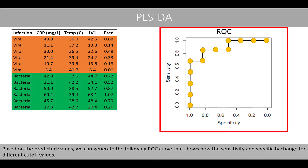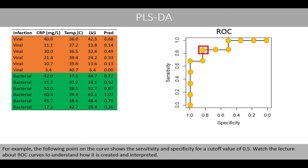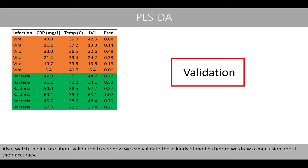Based on the predicted values, we can generate the following ROC curve that shows how the sensitivity and specificity change for different cut-off values. For example, the following point on the curve shows the sensitivity and specificity for a cut-off value of 0.5. Watch the lecture about ROC curves to understand how it is created and interpreted. Also, watch the lecture about validation to see how we can validate these kinds of models before drawing a conclusion about their accuracy.